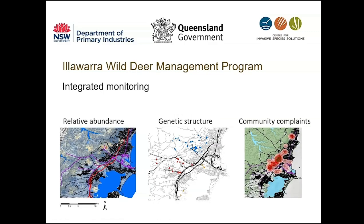To understand why that happened, we used different tools — specifically, we collected tissue samples from deer across the region to look at the genetic structure of the population. This allowed us to identify three different sub-populations that could be targeted by management. We were also able to compare the abundance with the genetic structure and community complaints collected by the city council. On those maps, there is a match between changes in genetic structure, high complaints, and high abundance — so these tools, when put together, can really inform the management.